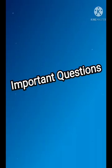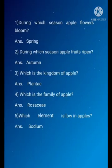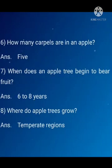Now at last, there are some important questions. During which season do apple flowers bloom? Answer is spring. During which season do apple fruits ripen? Answer is autumn. Which is the kingdom of apple? Plantae. Which is the family of apple? Rosaceae. Which element is low in apples? Sodium. How many carpels are present in an apple? Five. When does an apple tree begin to bear fruits? Six to eight years. Where do apple trees mostly grow? Apple trees mostly grow in temperate regions.